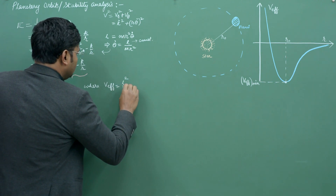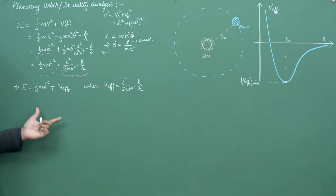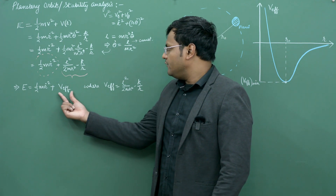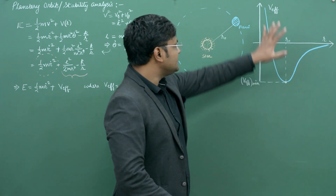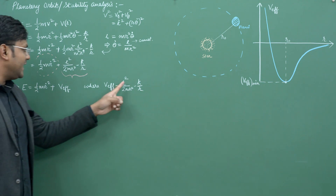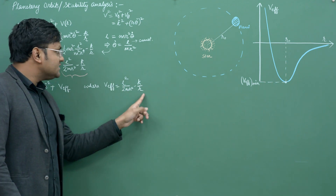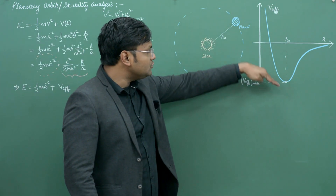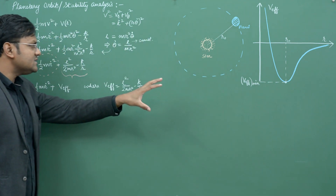The beauty of this expression is that we can do a lot of analysis just by understanding V_eff. For example, if I plot V_eff as a function of r, the radial distance, the plot looks something like this: it decreases, goes to negative values, reaches a minimum, and then increases but remains negative as r tends to infinity.